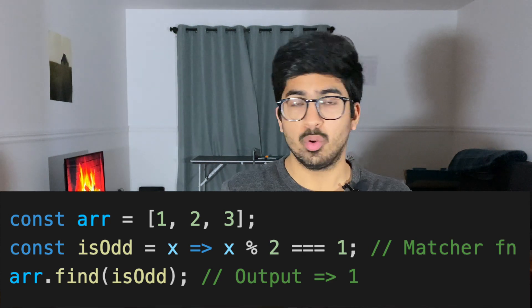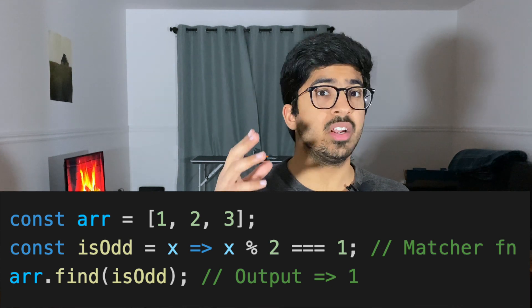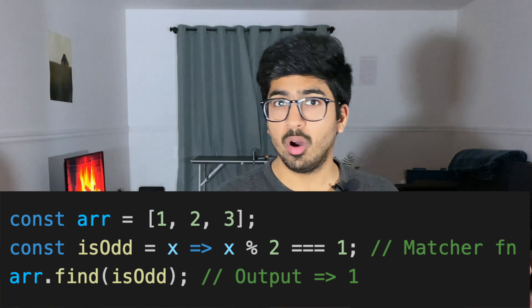Now the second and my favorite one is find. For example, let's say we have an array of elements one, two and three and we want to find an odd number. Now to find an odd number, we know that if we take a number modulus two, if we get one, it's an odd number. If you get zero, it's an even number. So that is basic math.